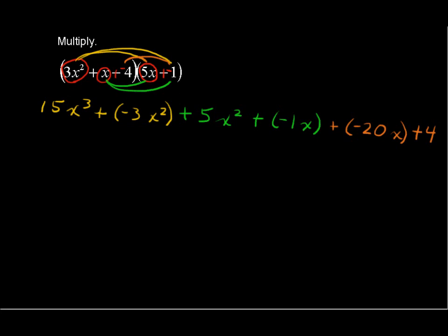Now let's combine some like terms. The 15x cubed, that term has no other like terms. That is, we don't see another x with an exponent of 3. So 15x to the third stays by itself. We can't combine it with anything else. Now we do have these terms negative 3x squared and positive 5x squared that we can combine. And we should. So negative 3 and positive 5 makes positive 2. So we have positive 2x squared.